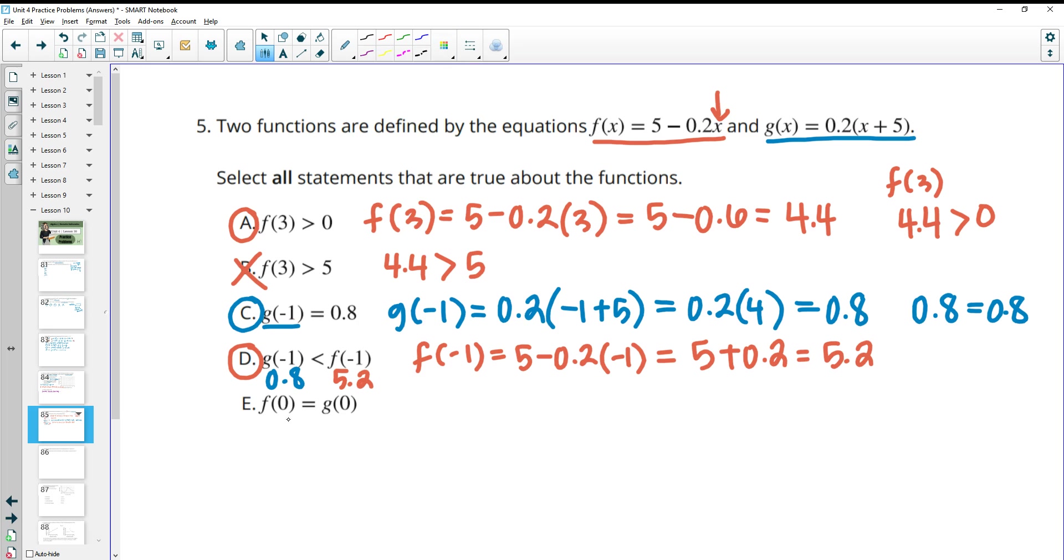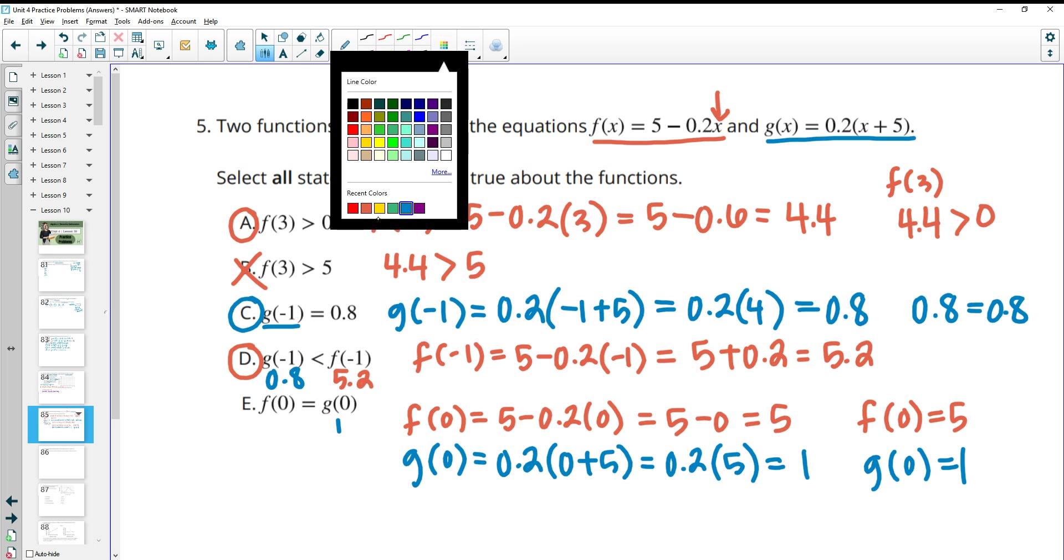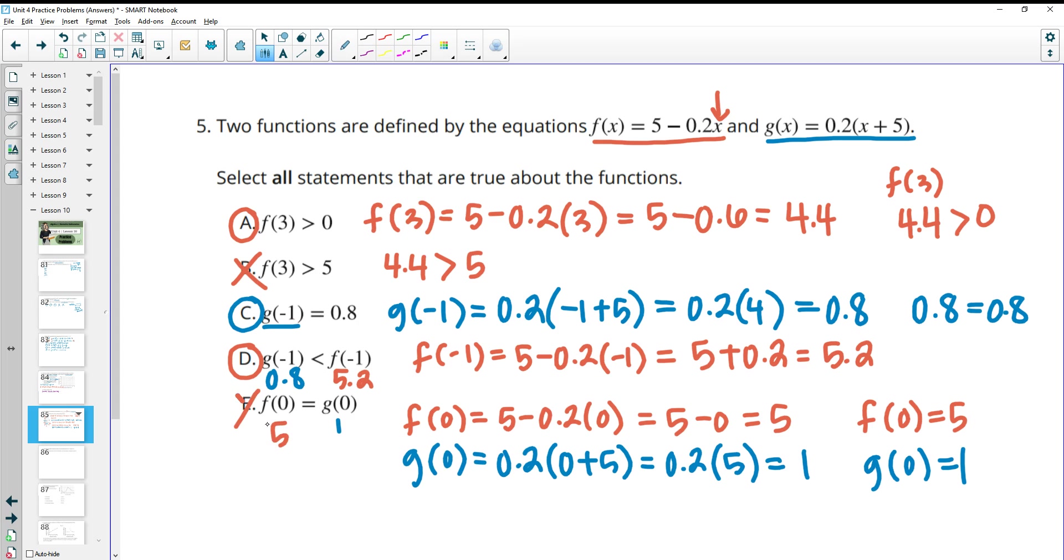Then part E asks us to find f(0) and g(0) and says that they're equal. So f(0) = 5 - 0.2 times 0. And -0.2 times 0 is 0. So this is just equal to 5. So f(0) = 5. So then let's take a look at what g(0) is and see if it's equal to that. So we'll plug this into the g function. And we'll get 0.2 times (0 + 5). So we'll do the parentheses first. So 0 + 5 is 5, and then 0.2 times 5 is 1. So we're getting that g(0) = 1. So this is saying that 5 = 1, basically. And that is not true. So E is false.